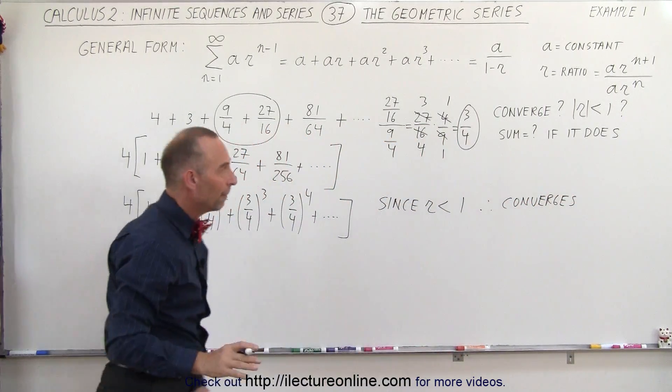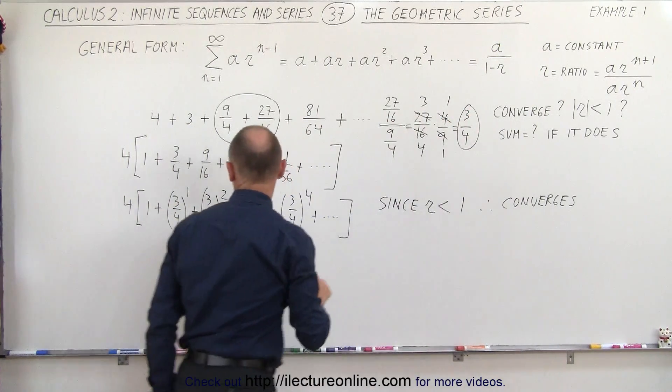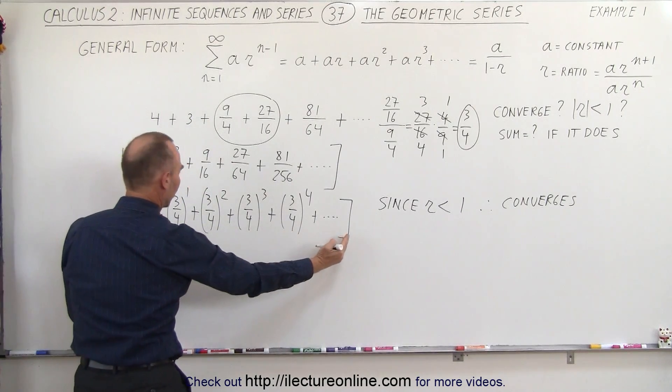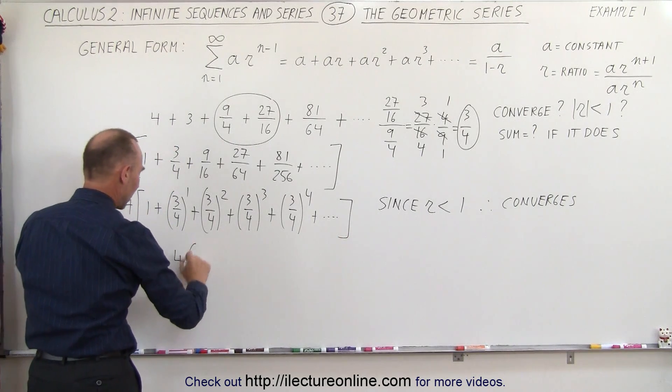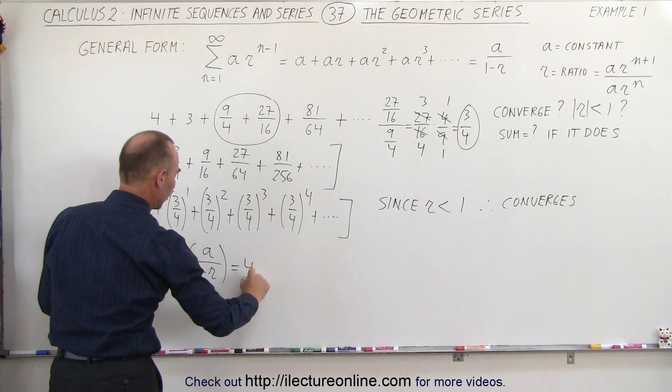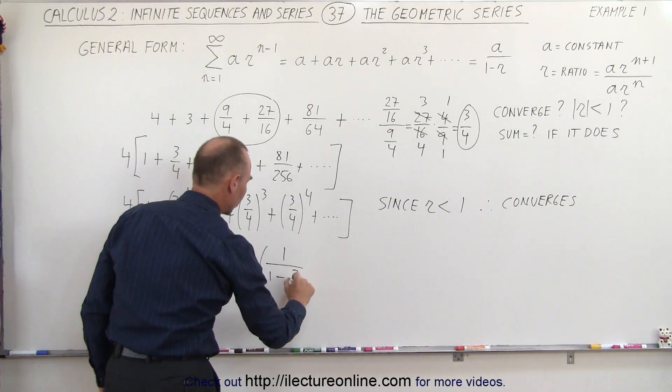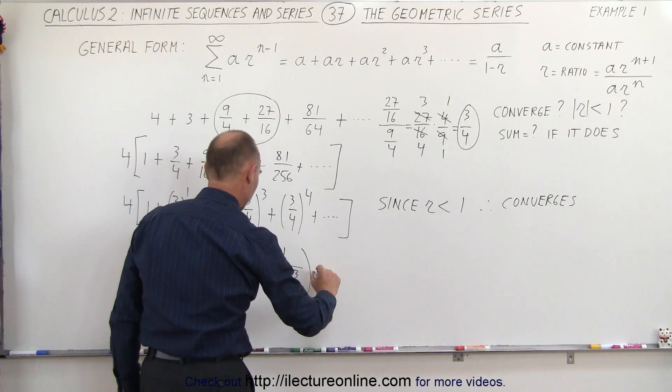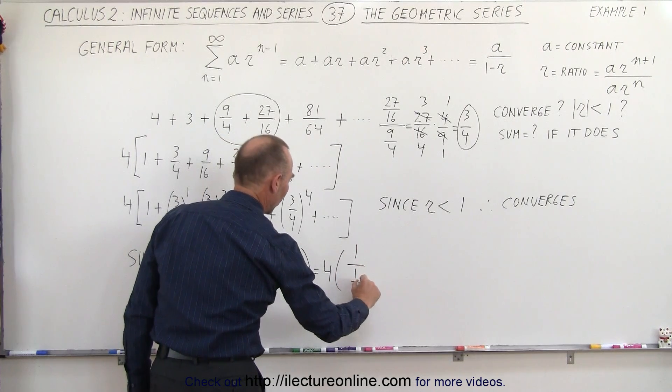Next, we want to find the sum. We know that the sum is going to be equal to a divided by 1 minus r. So the sum is equal to, now that of course would be the sum for this portion. We know that everything must be multiplied times 4, so we got 4 times a over 1 minus r. So this is 4 times 1 divided by 1 minus the ratio 3 quarters. So 1 minus 3 quarters, that would be 1 quarter.